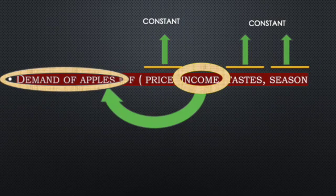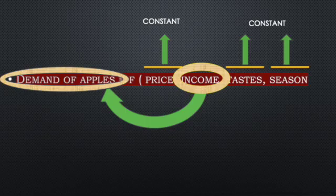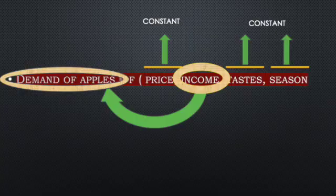Then we build another scenario. What if incomes change now? What will be the impact on quantity of apples being demanded? But while we do that, tastes, seasons, as well as prices are kept constant. We keep on doing this for each possible factor that can impact demand while all other factors are kept constant. Hence, Ceteris Paribus.